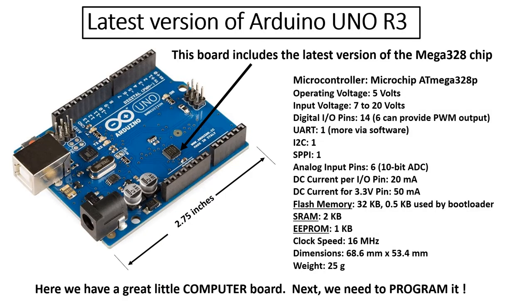Now we've arrived at our destination: the Uno. Here, courtesy of Arduino in a public domain picture, is the latest version of the Uno type R3, with an arrow pointing to the ATmega 328 chip. You can see how tiny it is on the board. The Uno itself is a little bit less than three inches long and not quite as wide — maybe the size of a pack of cigarettes.